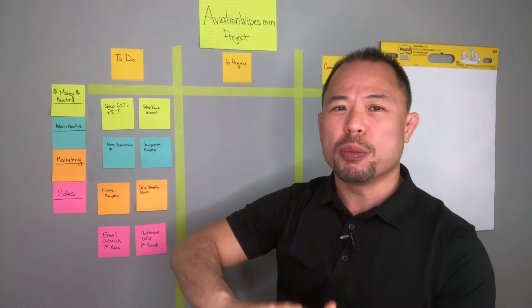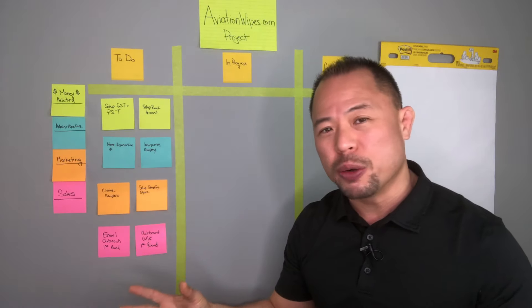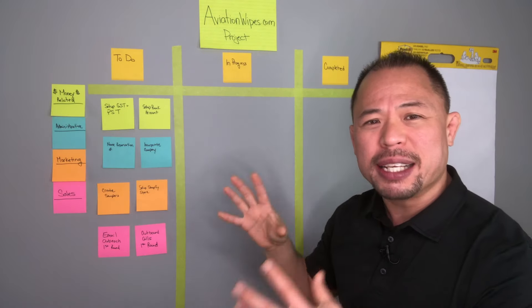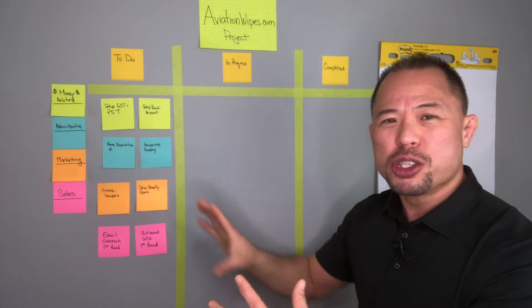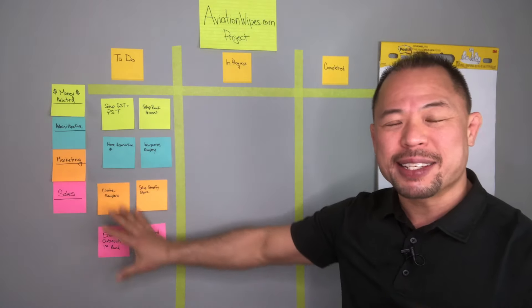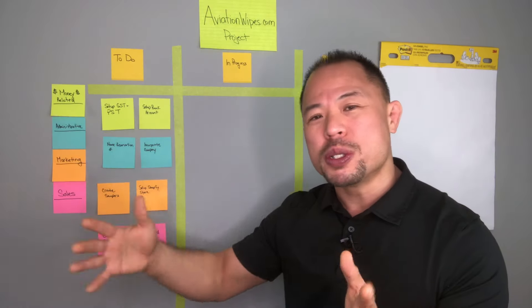From there, I brainstormed a bunch of ideas in terms of what I needed to do to get going. And this is what I came up with. Now Kanban is used for short-term projects, so this is something that I did in a 30-day span. So once the 30 days is over and these tasks are completed, I'll come up with a new set of tasks to do in the next 30 days.